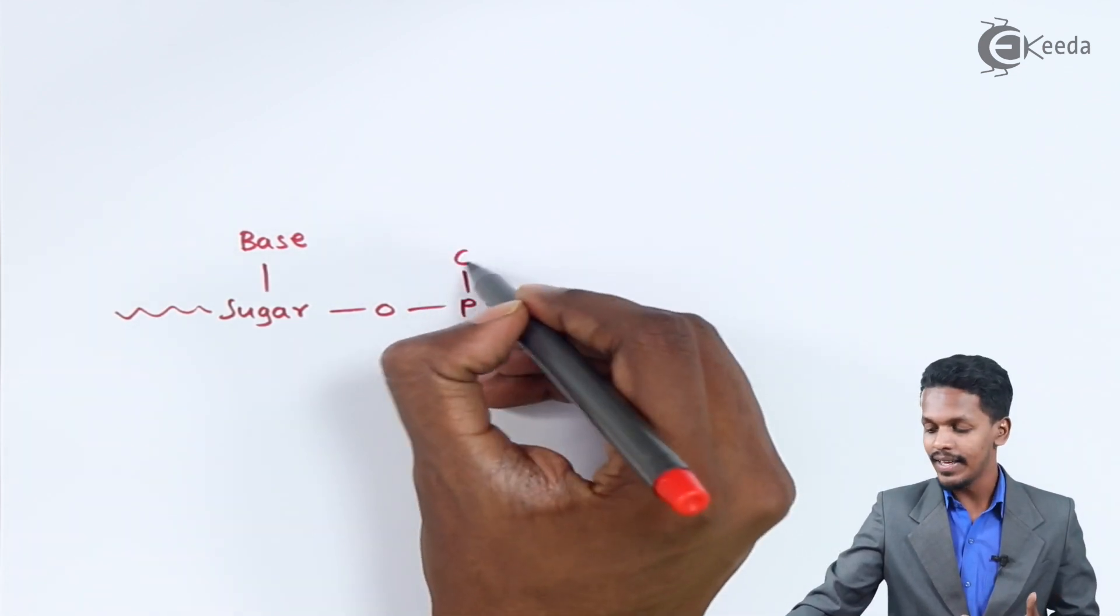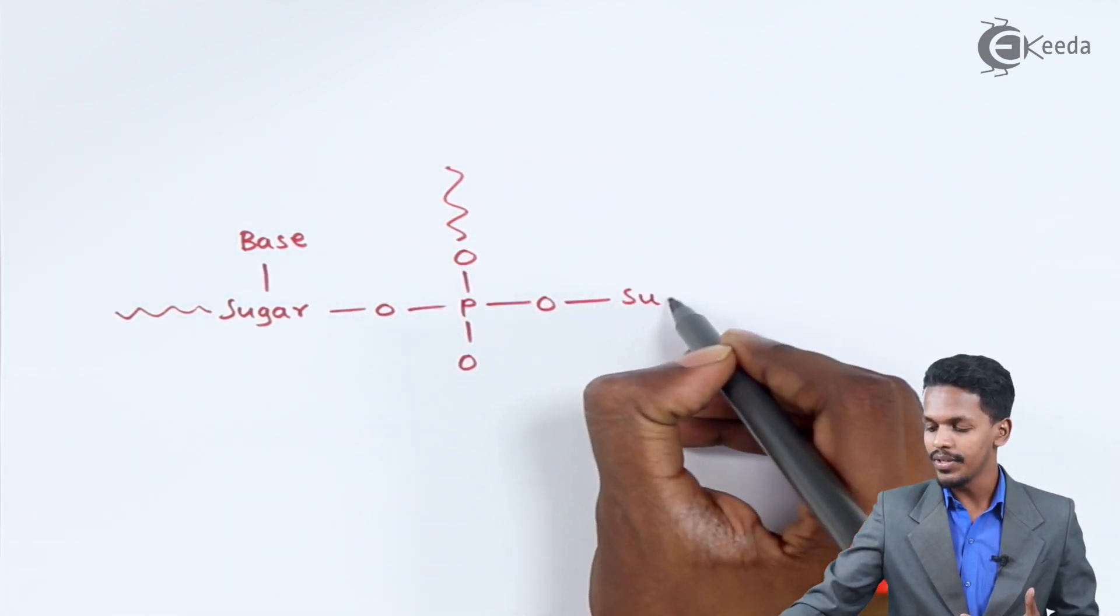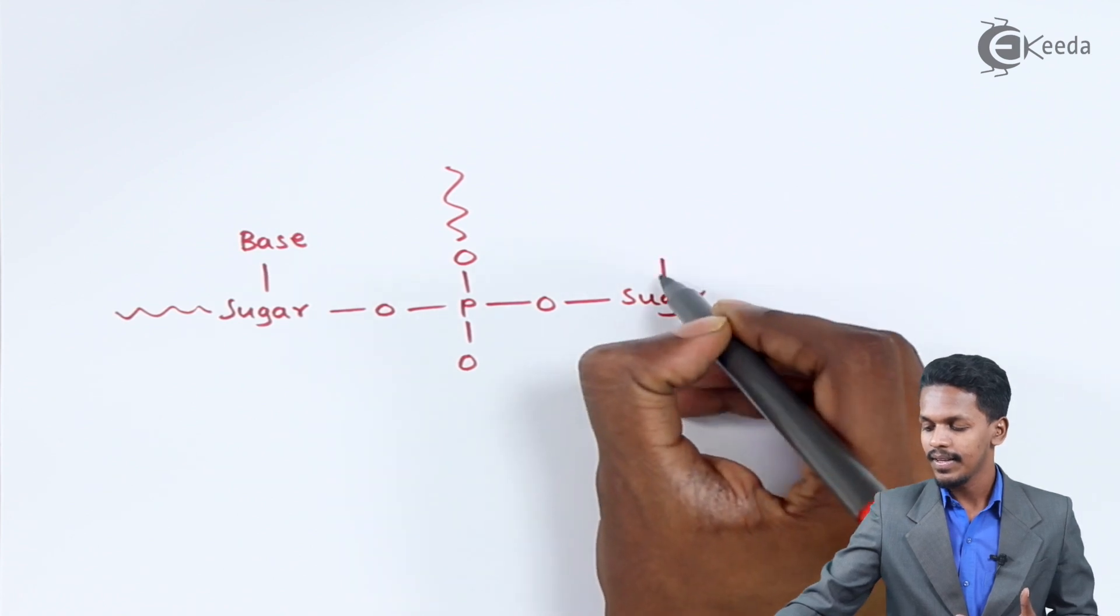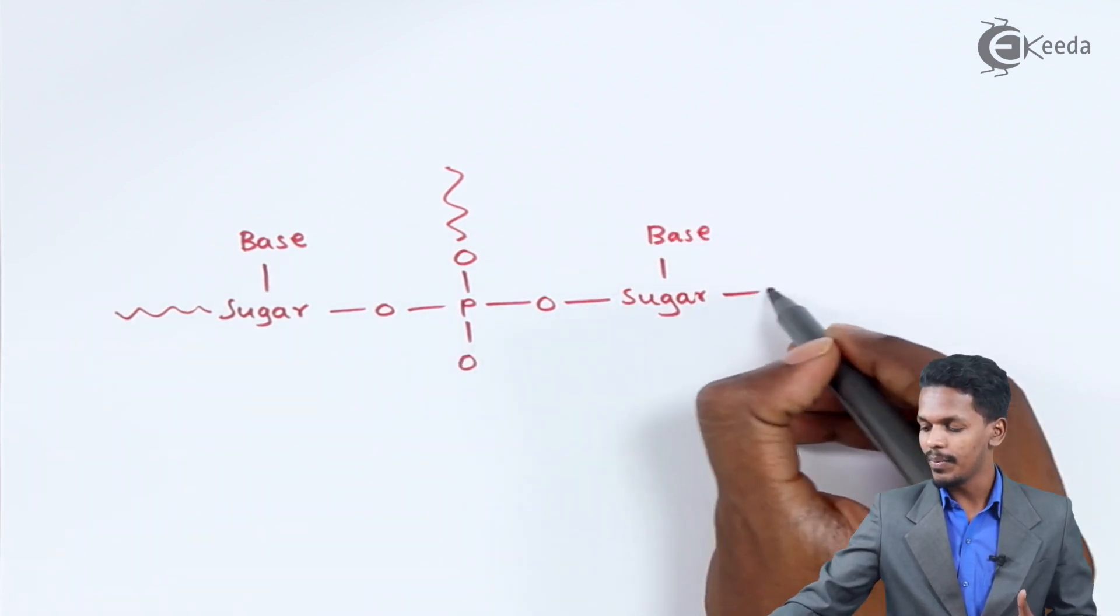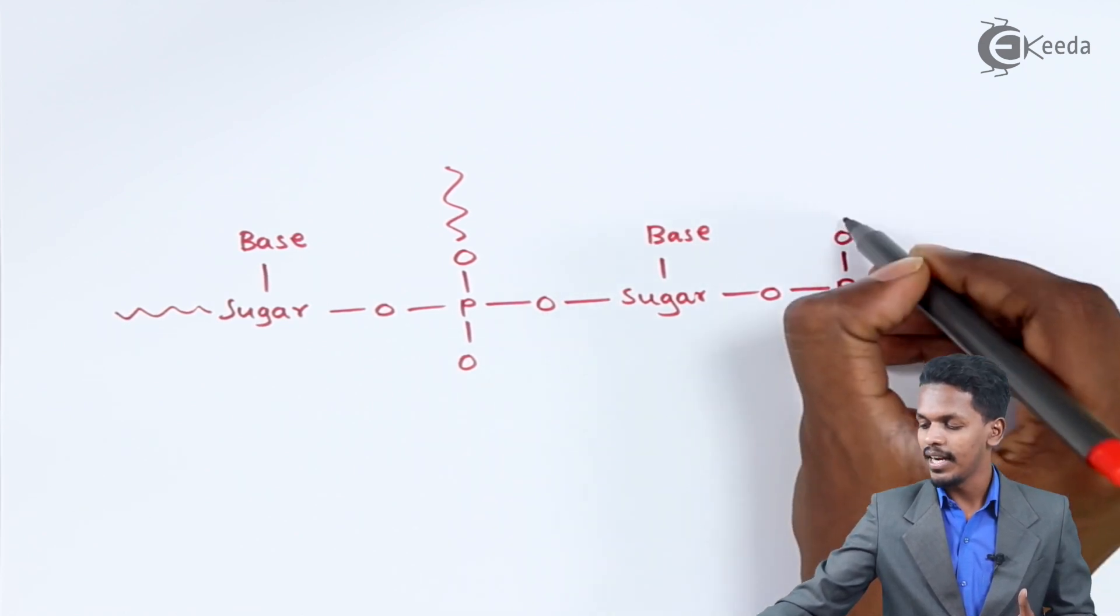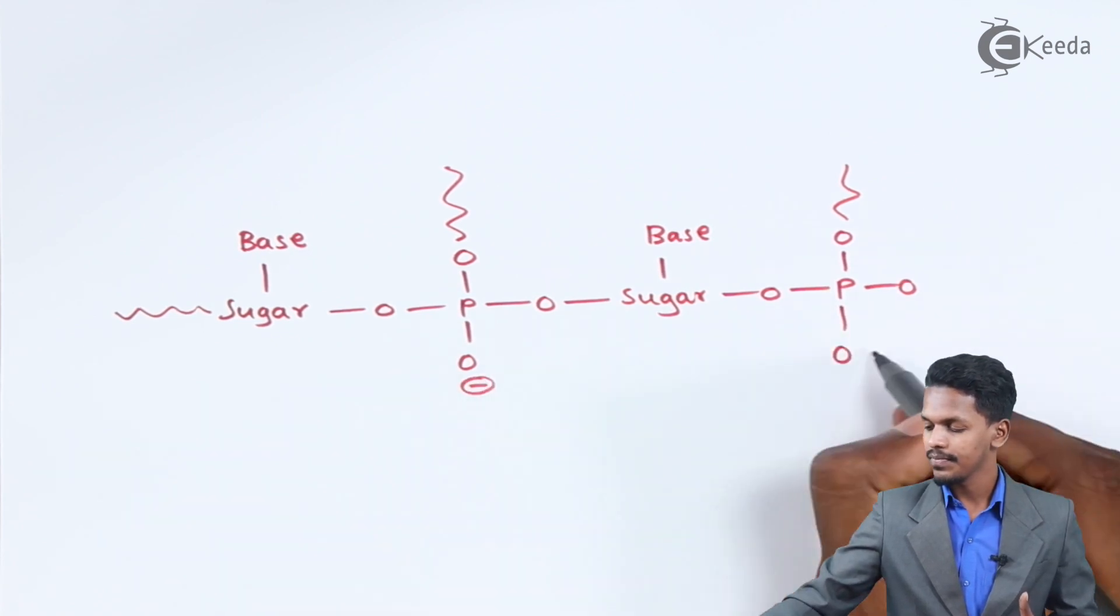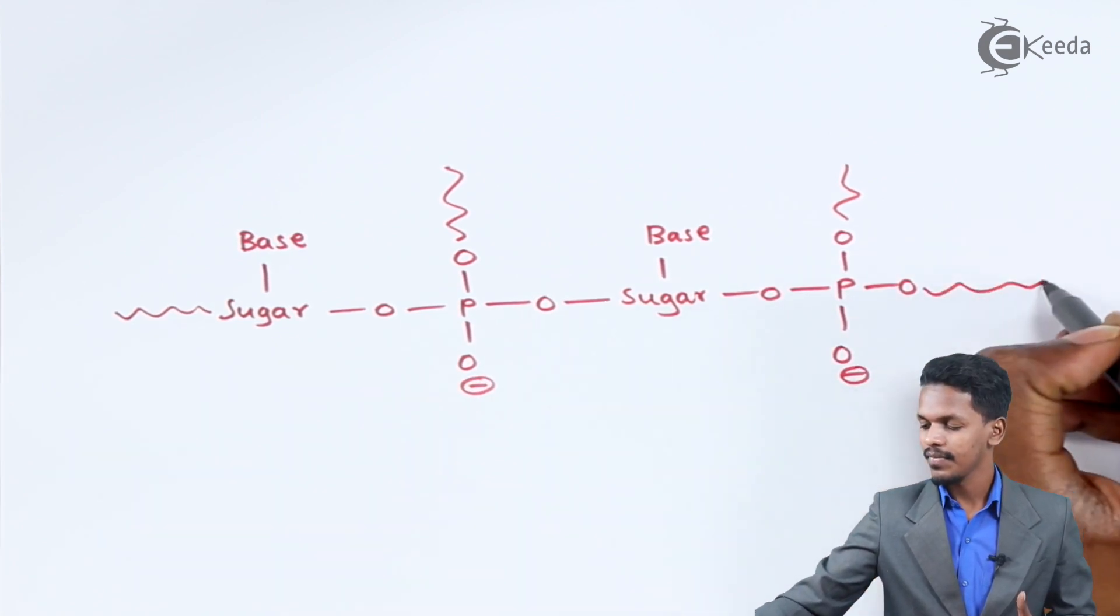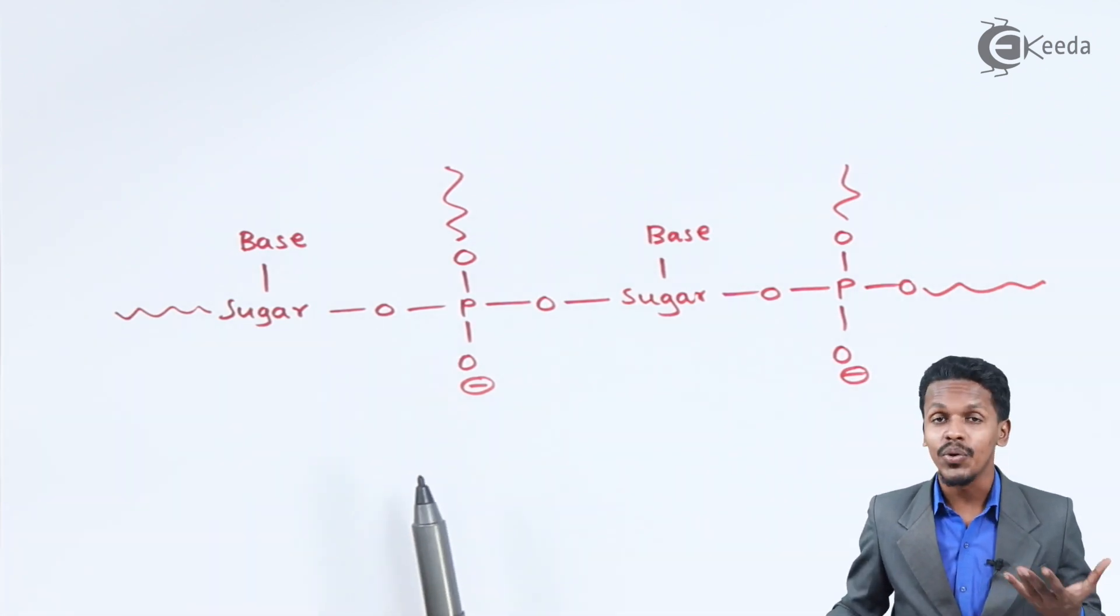Here also there is a polymer. Again there will be sugar, here there will be base, and again here there will be phosphoric acid. This forms an ester-like structure. This is the structure of nucleotide.